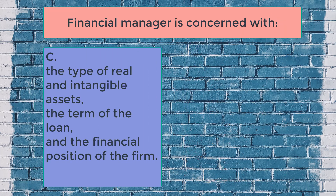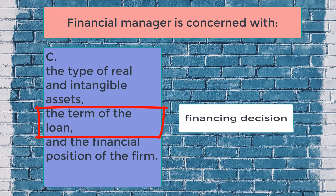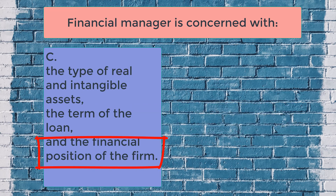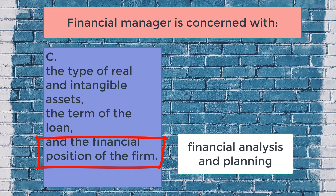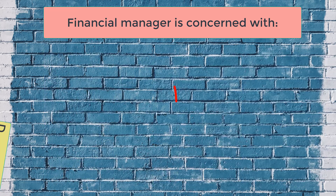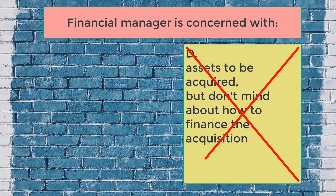For C, being concerned with the type of real and intangible assets is an investment decision. In financing decision, the financial manager also reviews the term of the loan, whether it is due in one year or ten years, whether it is payable in foreign currency, among others. The financial manager is also concerned about the financial position of the firm as part of financial analysis and planning. So C is the correct answer. Letter D ignores the financing decision, and is therefore a false statement.